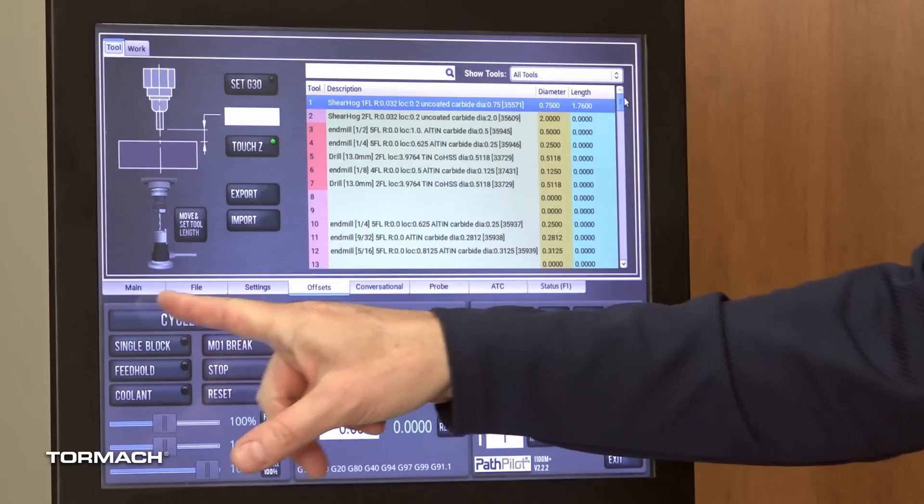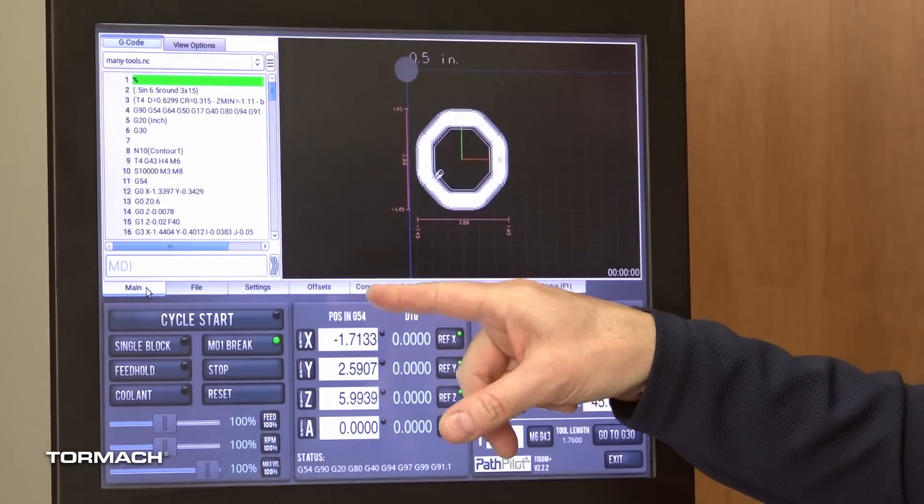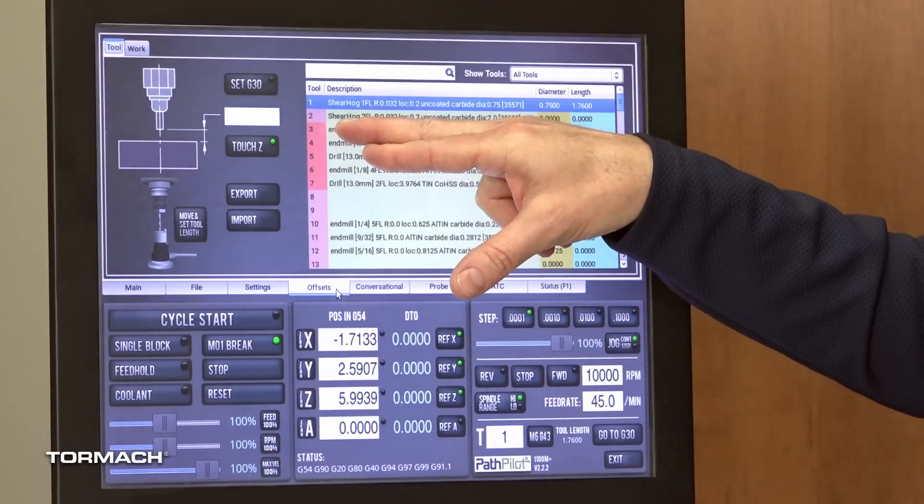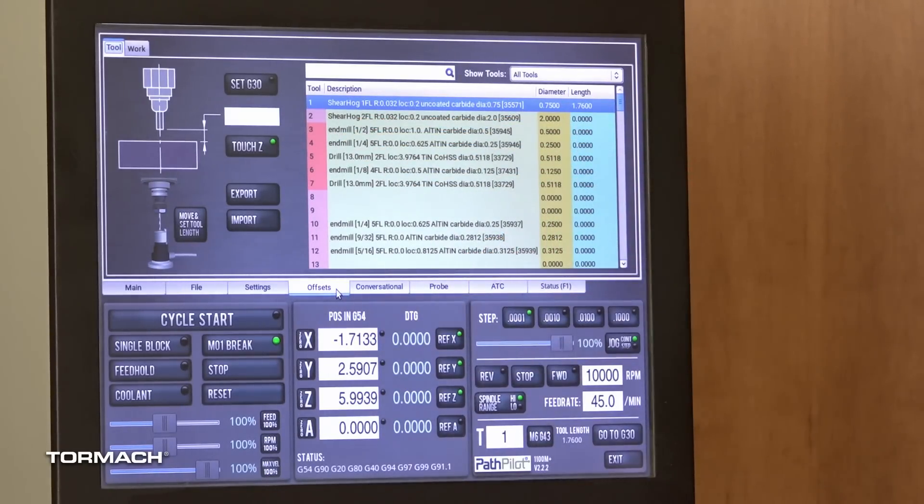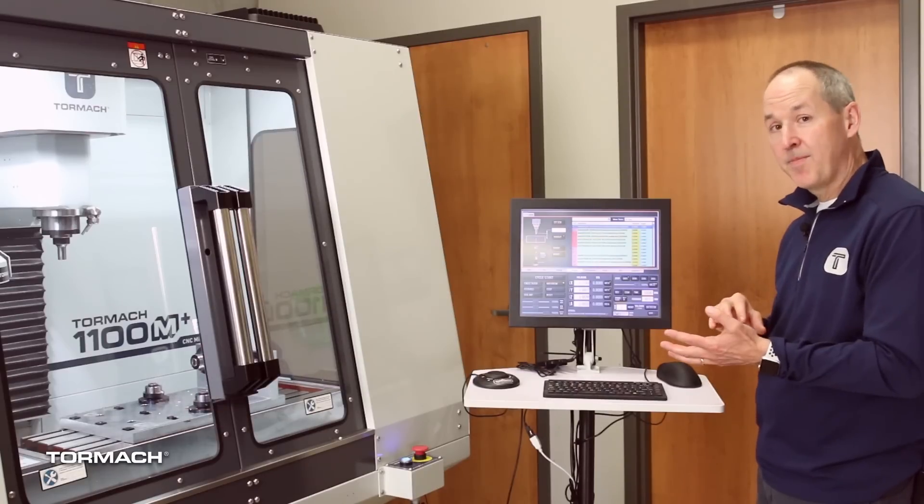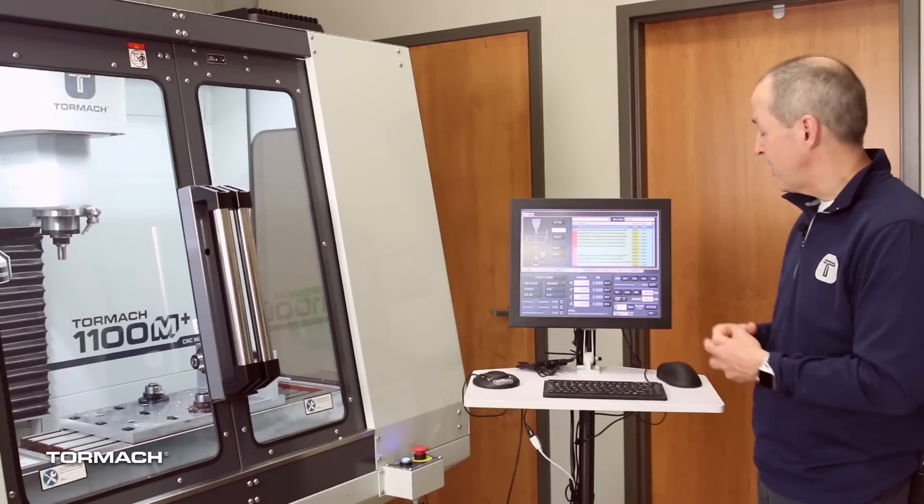So I've got a program loaded here and once you load a program you'll notice a few things. One is that the tools that are used by the current program, the tool number is shaded a little darker. So that's one clue that these are used.